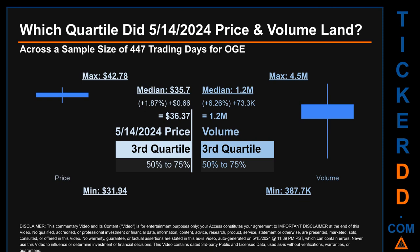Hello, my name is Maria. Which quartile did May 14th, 2024 price and volume land in, across a sample size of 447 trading days? The maximum end-of-day price for OGE was $42.78 while the minimum was $31.94. Within that price range, May 14th's price of $36.37 landed within the third quartile — the 50 to 75 percentile range. The day's volume also landed within the third quartile, within the 50 to 75 range, which saw a max daily volume of 4.5 million and a minimum of 387,700.